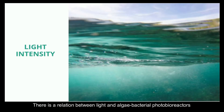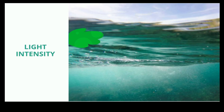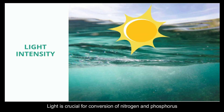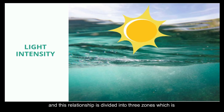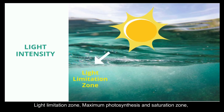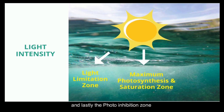Next is light intensity. There is a relation between light and algae bacterial photobioreactors. Light is crucial for the conversion of nitrogen and phosphorus. This relationship is divided into 3 zones: the light limitation zone, maximal photosynthesis and saturation zone, and lastly, the photoinhibition zone.